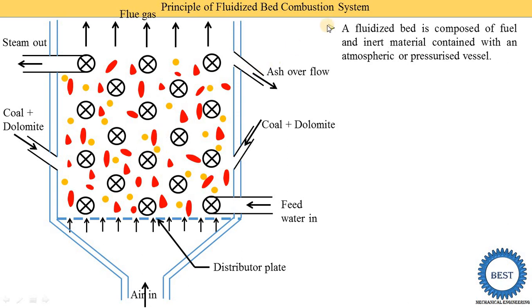Before moving on, I will explain these basic things. The fluidized bed is composed of fuel and inert material contained within an atmospheric or pressurized vessel. In the fluidized bed, we insert the fuel — coal — and dolomite as an inert material. This vessel has two types: one is atmospheric, where the pressure inside the vessel is at atmosphere, and the second is pressurized, where there is a pressure different from the atmosphere.